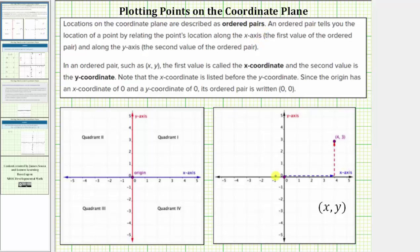Remember, the x-axis is the horizontal axis and the y-axis is the vertical axis. So every ordered pair is going to be in the form of x comma y in a set of parentheses.